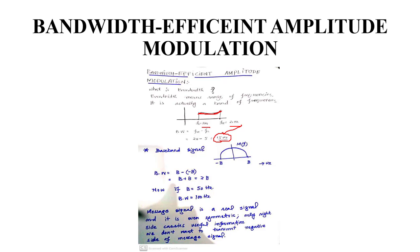Now if we have a baseband signal, for example a message signal M(f) — this is its Fourier transform. The frequency range goes from minus B to B, where B is in Hertz — for example up to 300 kHz.